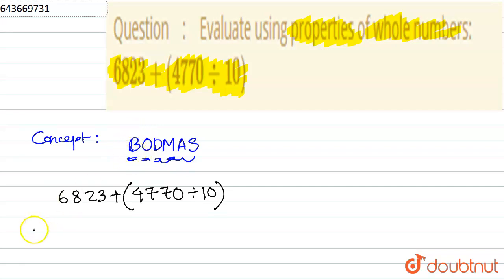Inside the bracket there is division, so 4770 divided by 10, the answer is 477.